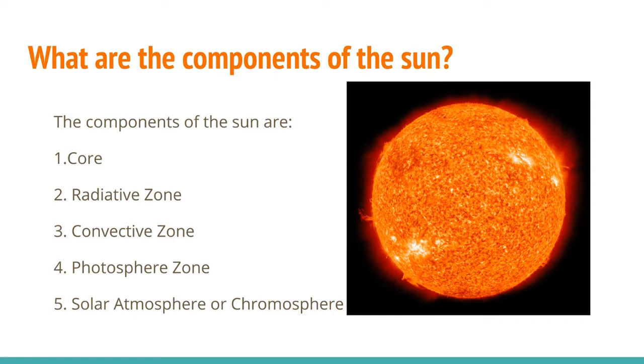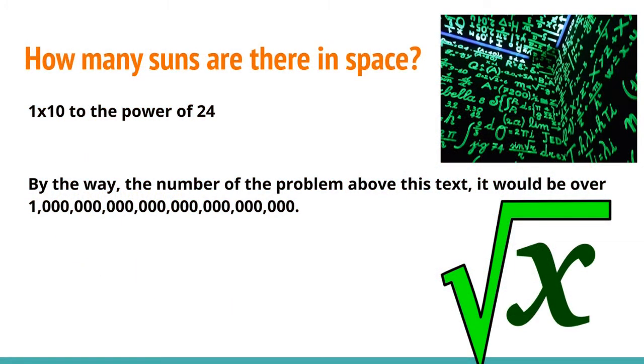What are the components of the Sun? The components of the Sun are: core, radiative zone, convective zone, photosphere zone, solar atmosphere or chromosphere.